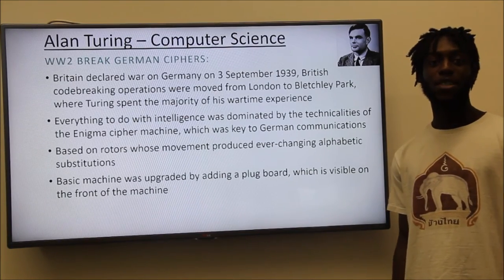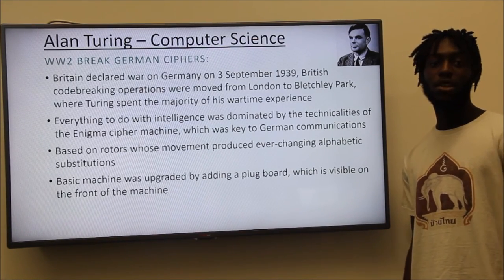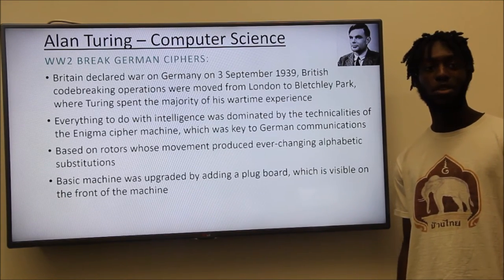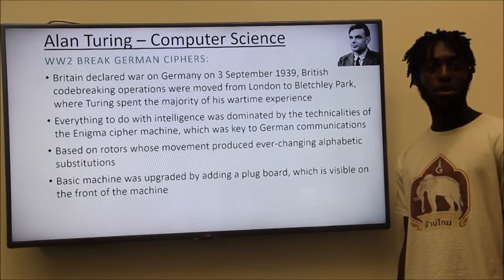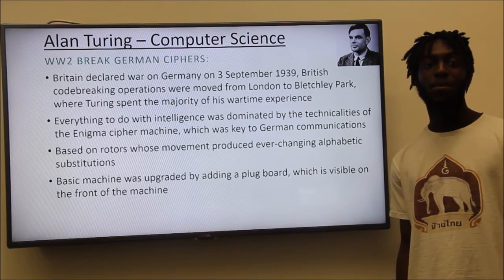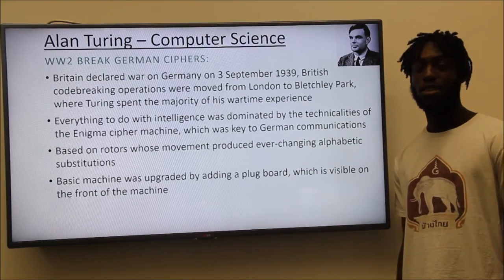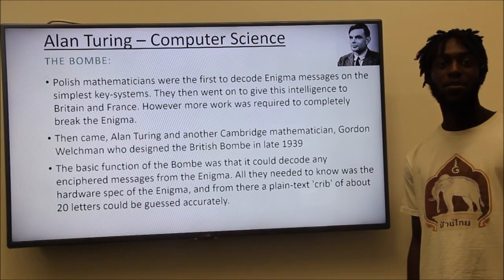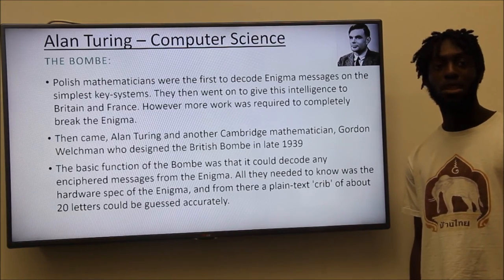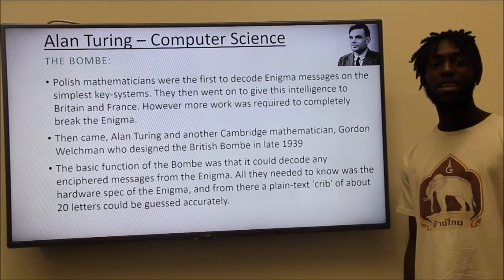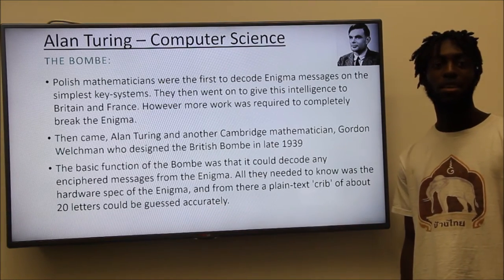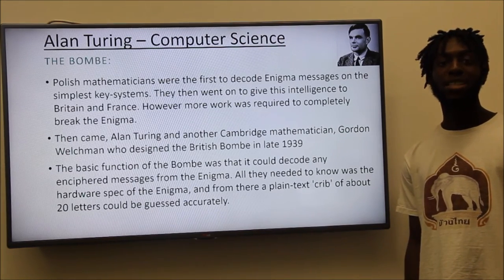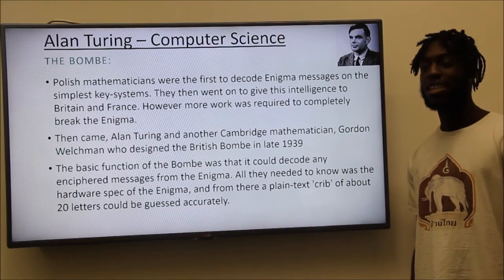The Turing machine had an influence in breaking German ciphers. Turing's mathematical background allowed him to create a machine that produced an ever-changing alphabetic substitution. The ciphers it produced were supposed to be unbreakable even by someone using the machine. Turing's solution to decoding the Enigma was the British Bombe, designed in 1939 to decode enciphered messages from the Enigma. It was first used in May 1940 to crack German Air Force messages. Only the hardware spec of the Enigma was needed, and using a plain text crib, about 20 letters could be guessed accurately.